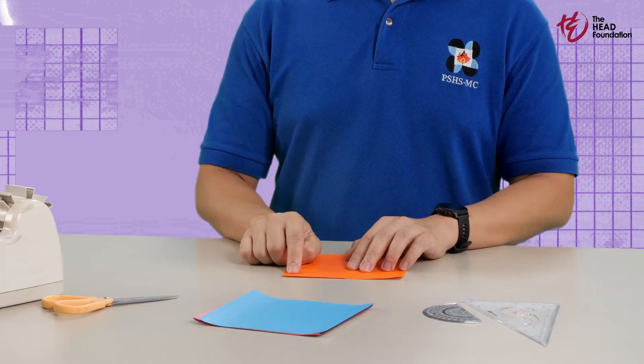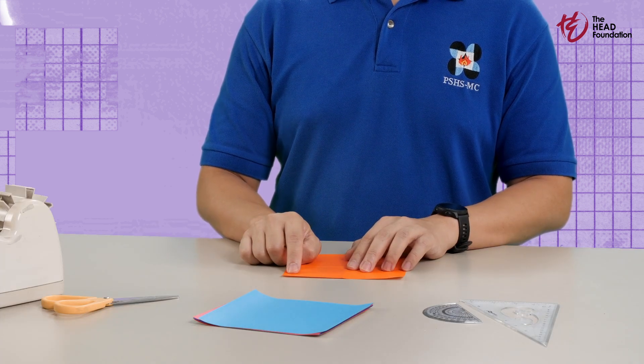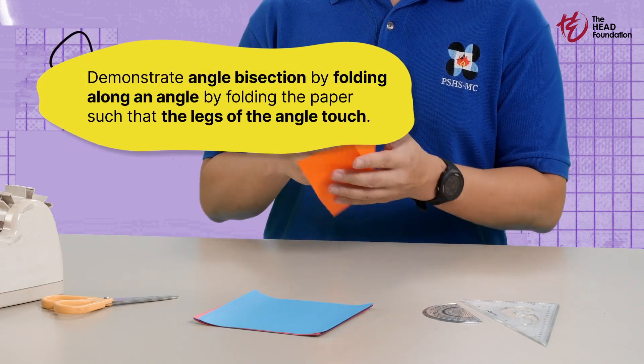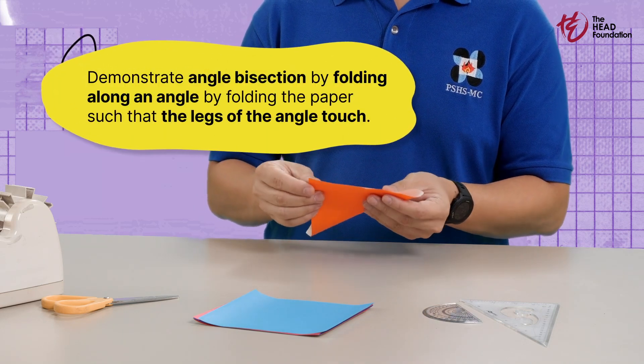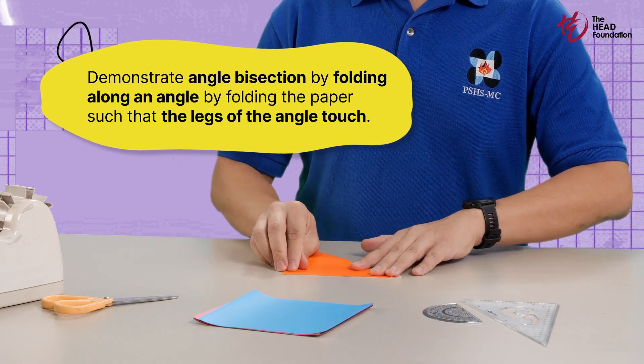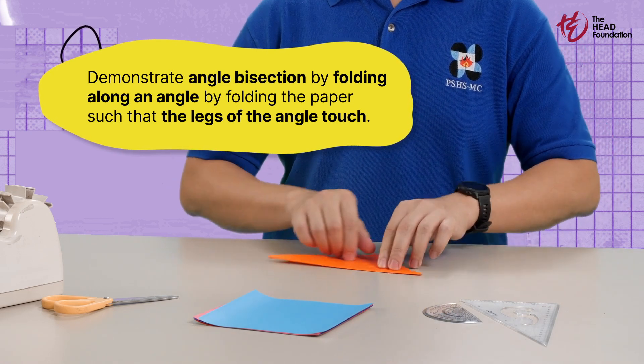But why stop there? Pick any angle. Go ahead. Any corner will do. We're going to fold the paper so the sides line up with each other, slicing that angle right down the middle. We've just bisected an angle.